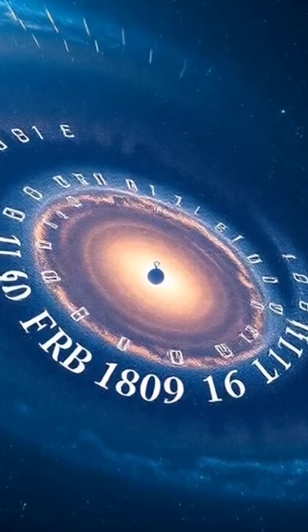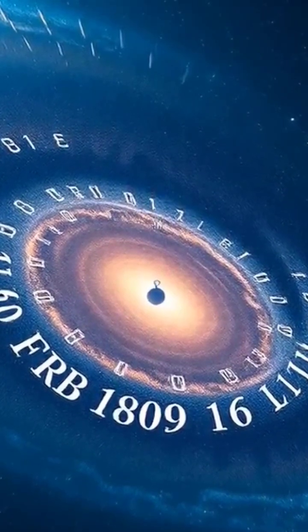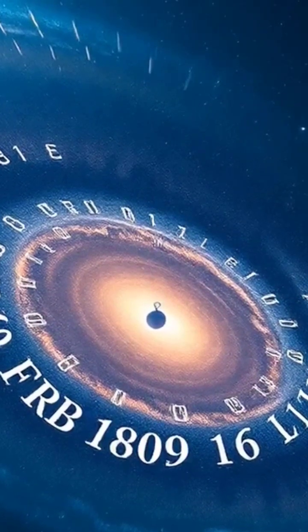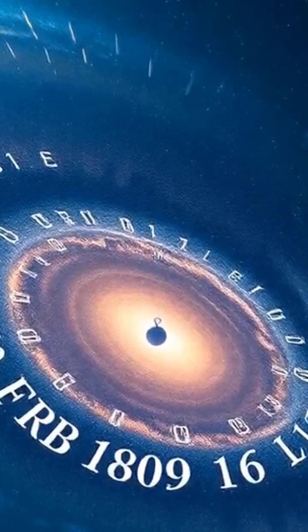While most FRBs happen randomly, this one is different because it follows a steady pattern, repeating like a cosmic metronome. This repeating FRB is called FRB 1809-16, and it comes from a galaxy about 500 million light-years away.